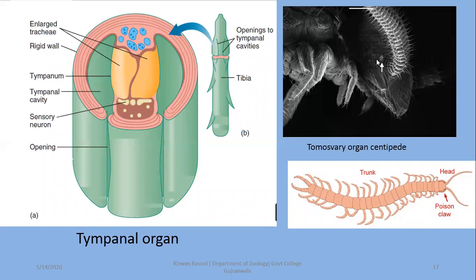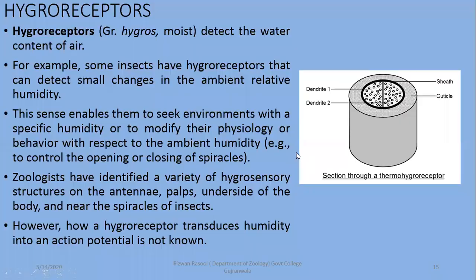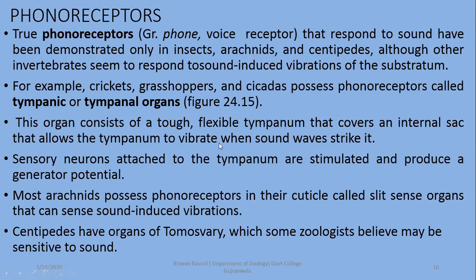In centipedes, there are some other organs known as the organ of Tömösváry, which are also responsible for the detection of sound and are a bit different from tympanal organs. This organ consists of a flexible tympanum that covers an internal sac that allows the tympanum to vibrate. Sensory neurons attached to the tympanum are stimulated and produce a generator potential or action potential — in other words, they generate a nerve impulse.